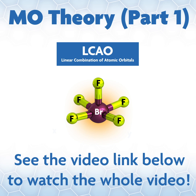Here we will discuss representations in molecular orbital theory under the LCAO method. In many systems, but not all, we have a central atom that resides on the point where all the symmetry operations meet. We will use this central atom to discuss irreducible representations in group theory and what they mean when applied to molecular orbital theory.